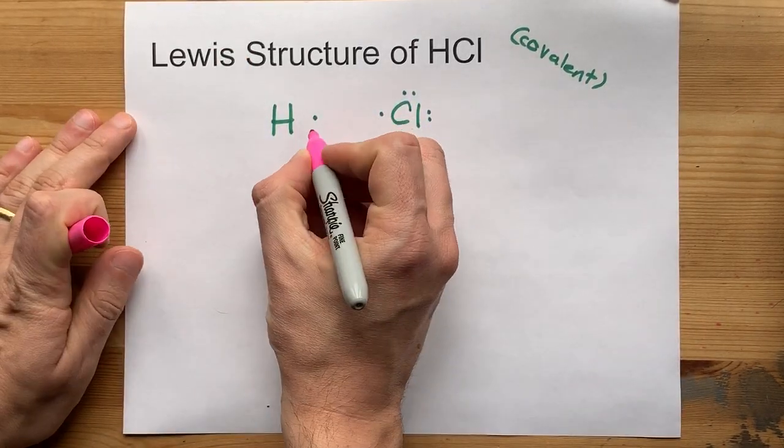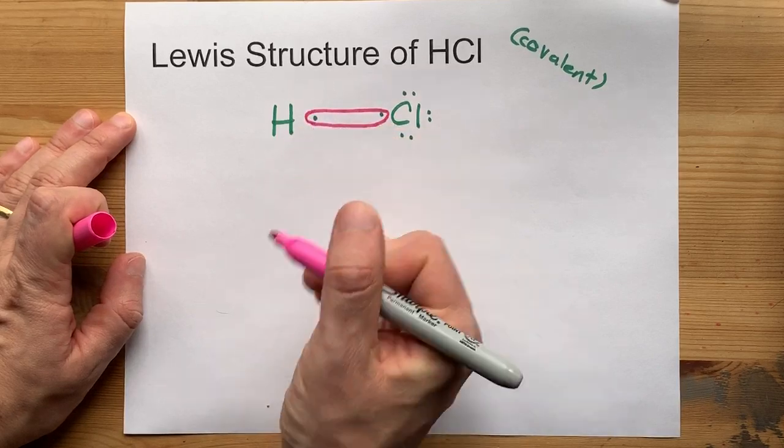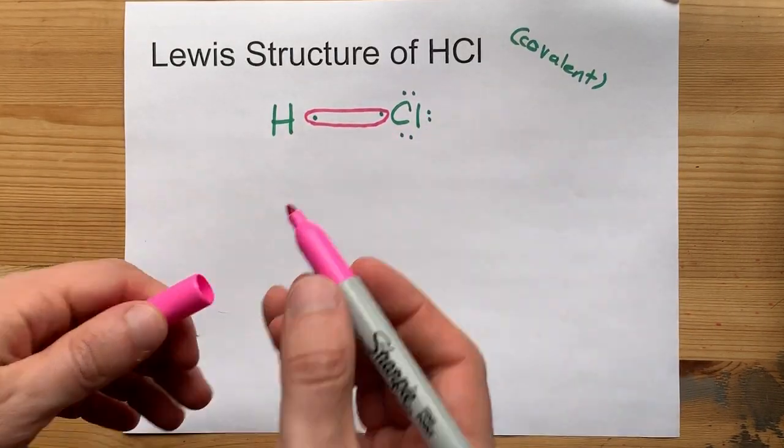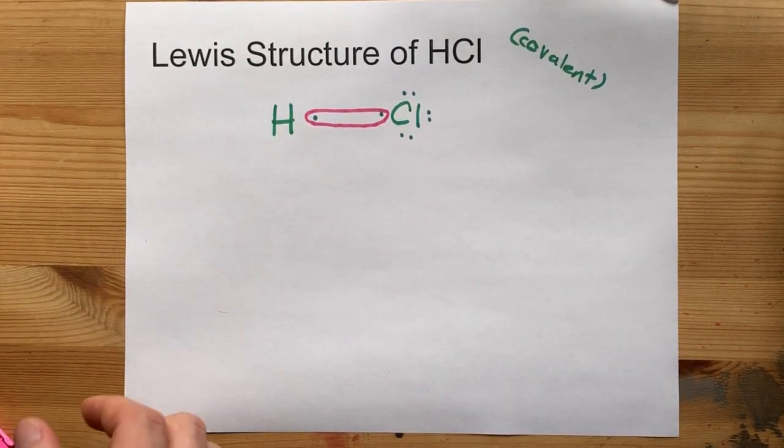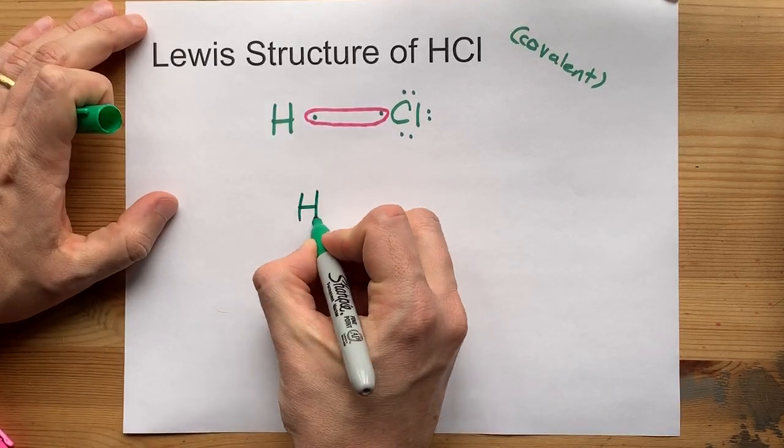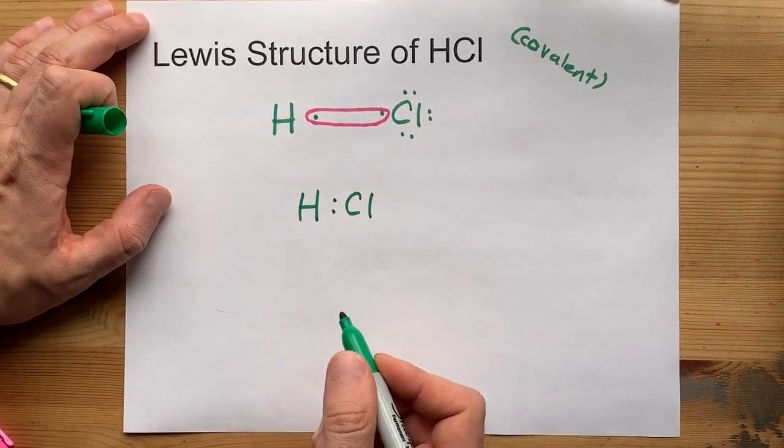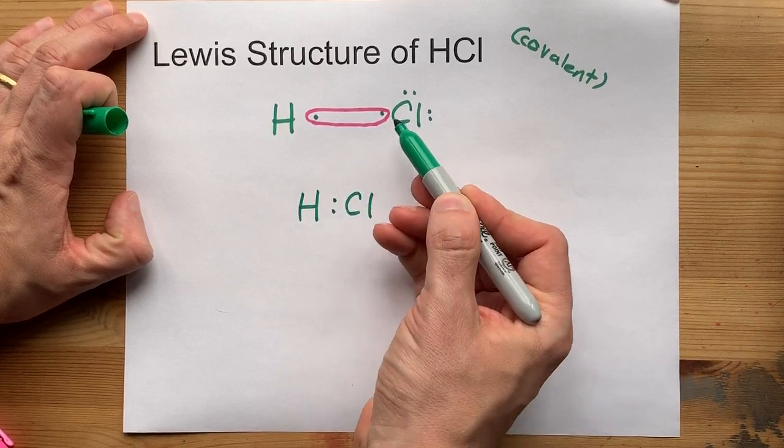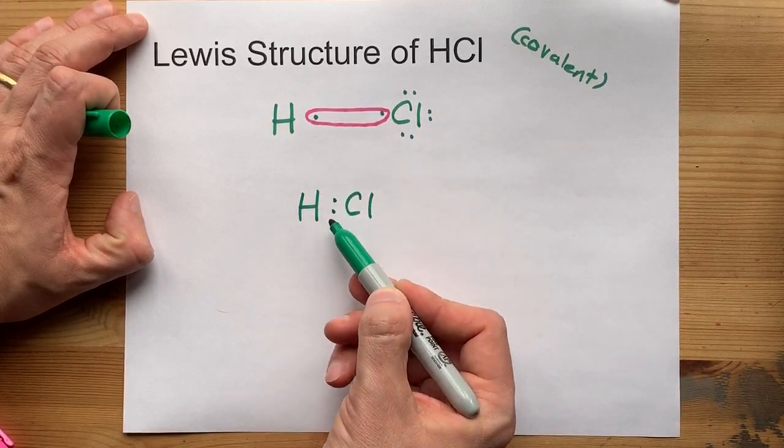That is what happens. These unpaired electrons pair together just like these guys had been paired. And you end up with a hydrogen and a chlorine sharing each of those electrons. One of them came from chlorine. One of them came from hydrogen.